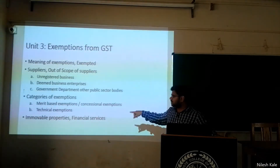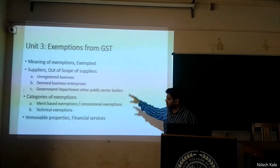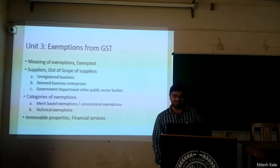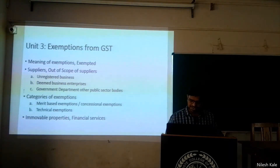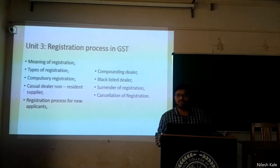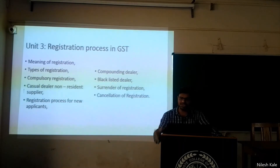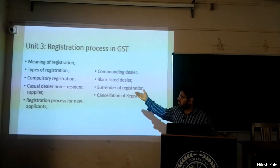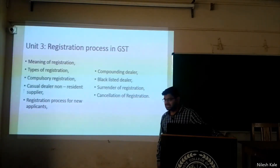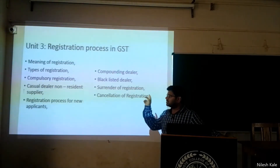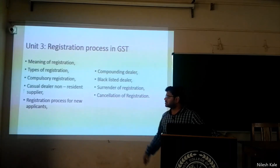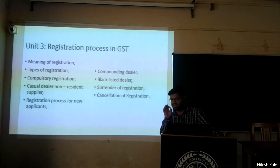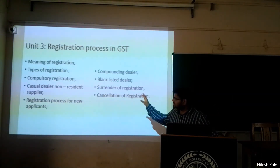We will also learn about immovable properties and financial services — whether any exemptions are available on these. Then the most important chapter: registration under GST. Here we are going to learn the meaning and types of registration, compulsory registration under section 24 of the GST act, section 27 covering casual dealers and non-resident suppliers, and the registration process for new applicants — including procedures and time limits — in detail.